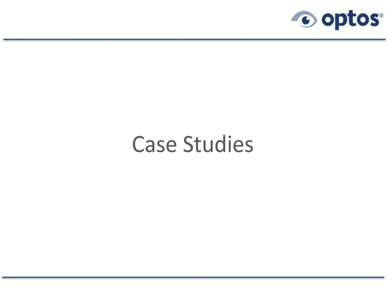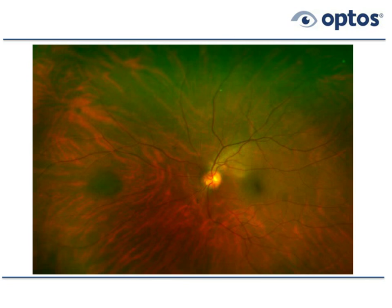Let's begin case studies with a choroidal nevus — a lesion that exists at the level of the choroid. This is an ultrawide field color image showing a darkly pigmented lesion in this left eye, nasal to the disc. Nevi occur in about 10% of patients imaged with ultrawide field. The composite Optos image gives us access to red laser and green laser separation. The red laser penetrates deeper and allows us to see choroidal vessels; the green laser doesn't penetrate beyond the RPE.